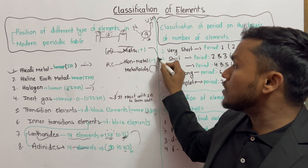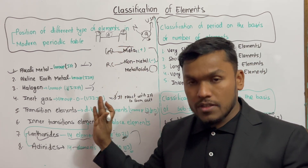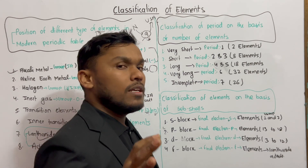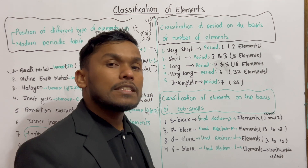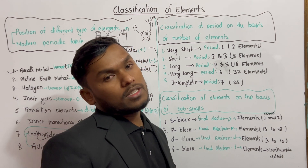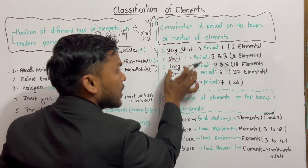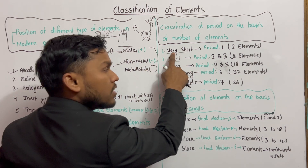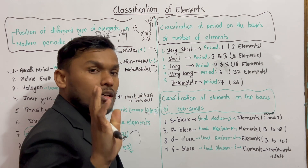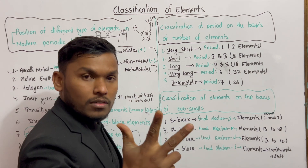Metalloids have two properties: metallic or non-metallic properties. Which period is known as very short period? Which period is known as incomplete? So: very short, short, long, very long, and incomplete.